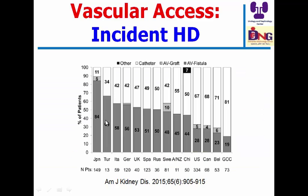Looking at international data, Japan is the best country — this is the percentage of patients starting dialysis initiation through fistula. In Japan it is very high, whereas in the United States it is 28% through fistula and 67% through catheters. Turkey, Germany, and Italy perform better than the US. The Gulf area is 20% through fistula.